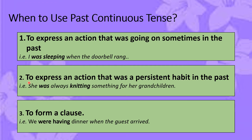Have a look at the second point. When you want to express an action that was a persistent habit in the past, you will use past continuous tense. For example, 'She was always knitting something for her grandchildren.' Here it means that knitting was her persistent habit. That is why she was always knitting something for her grandchildren, so you use past continuous tense to talk about that action.